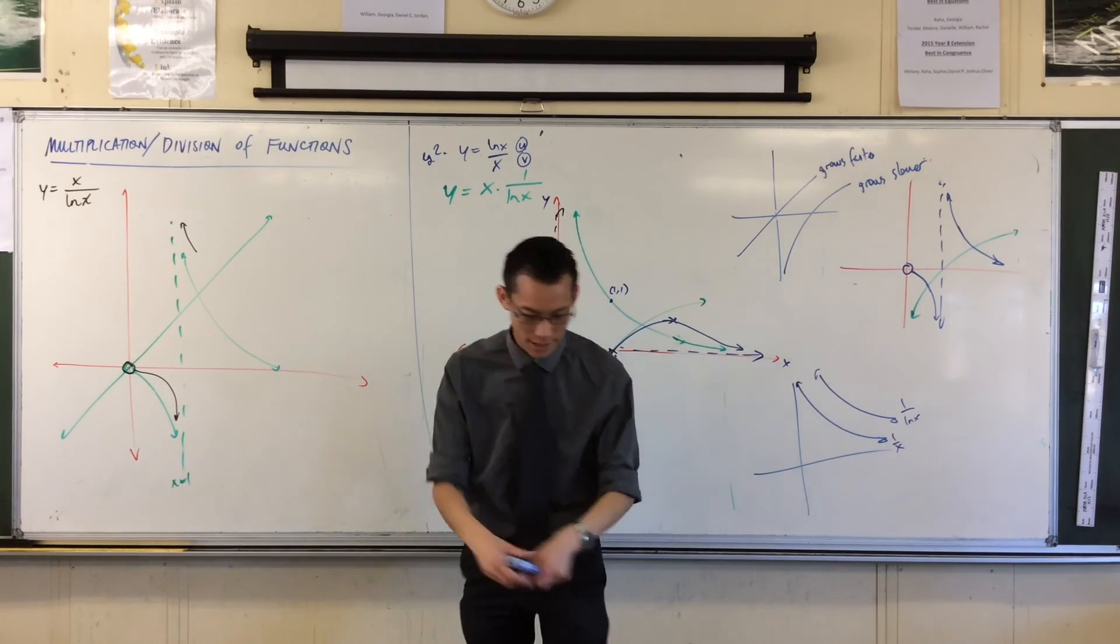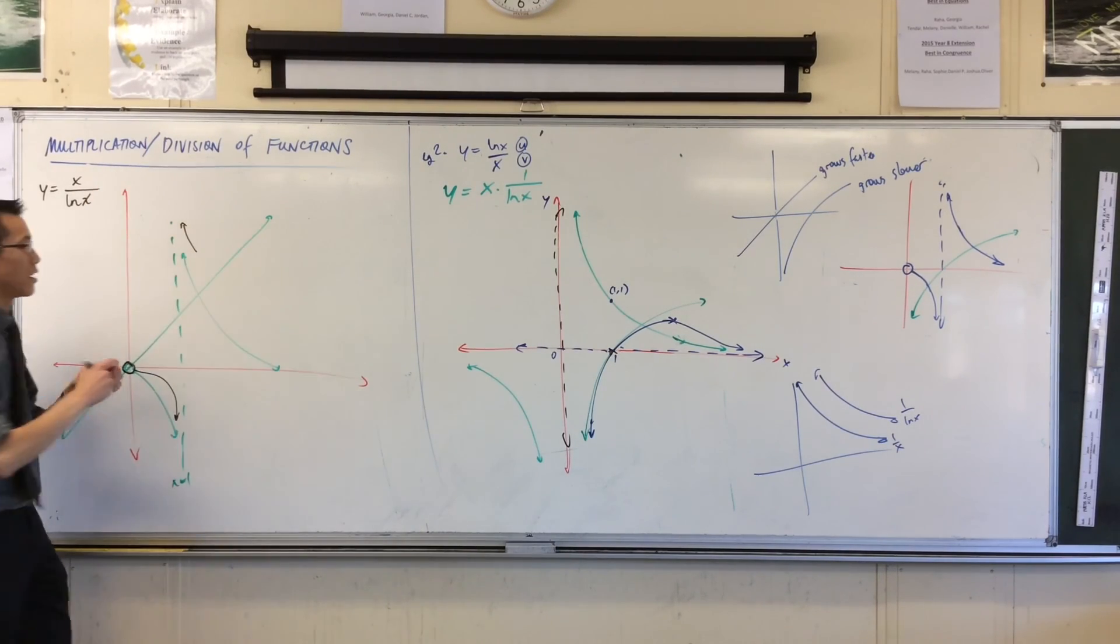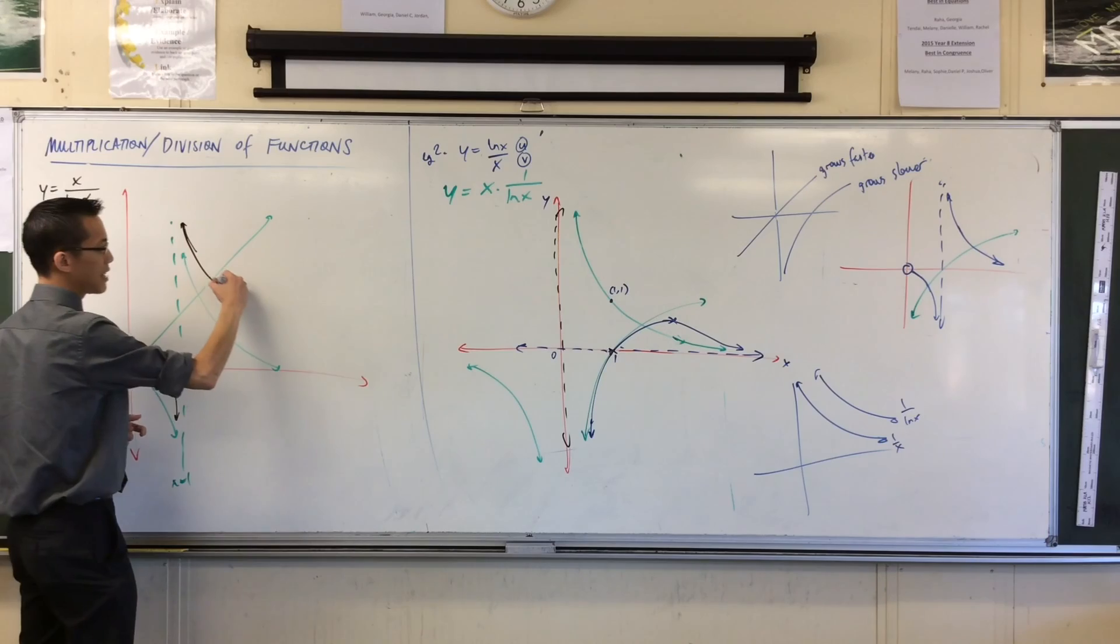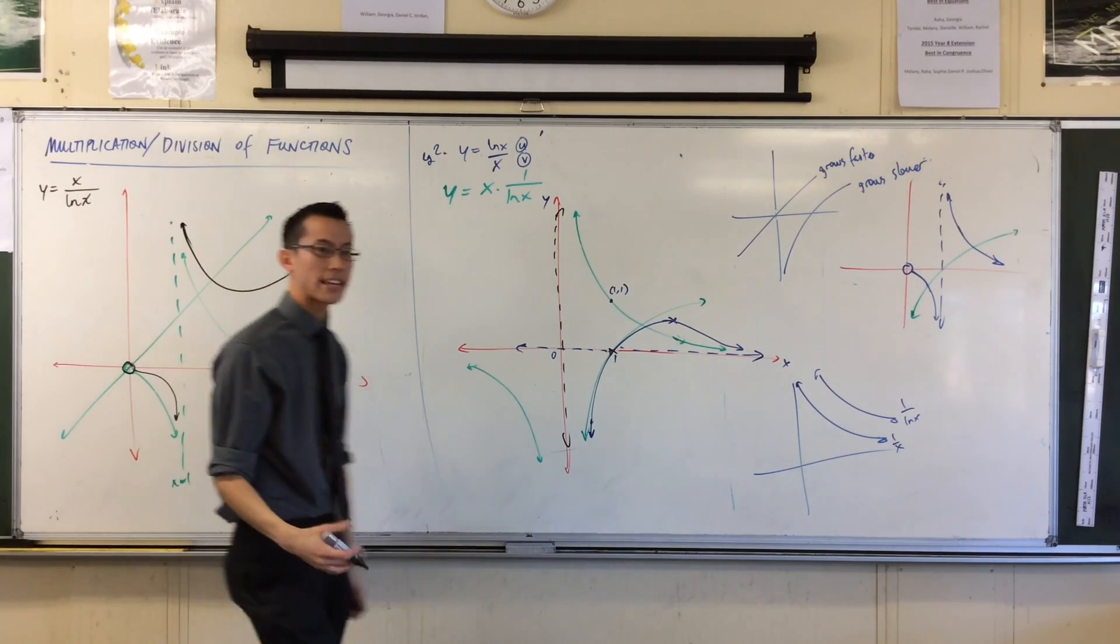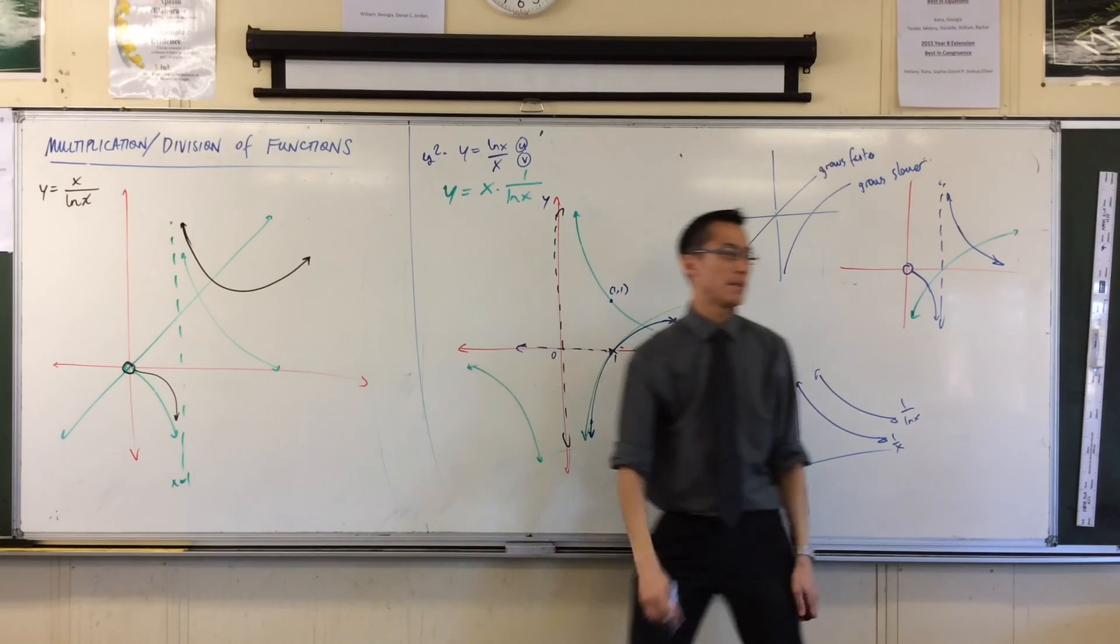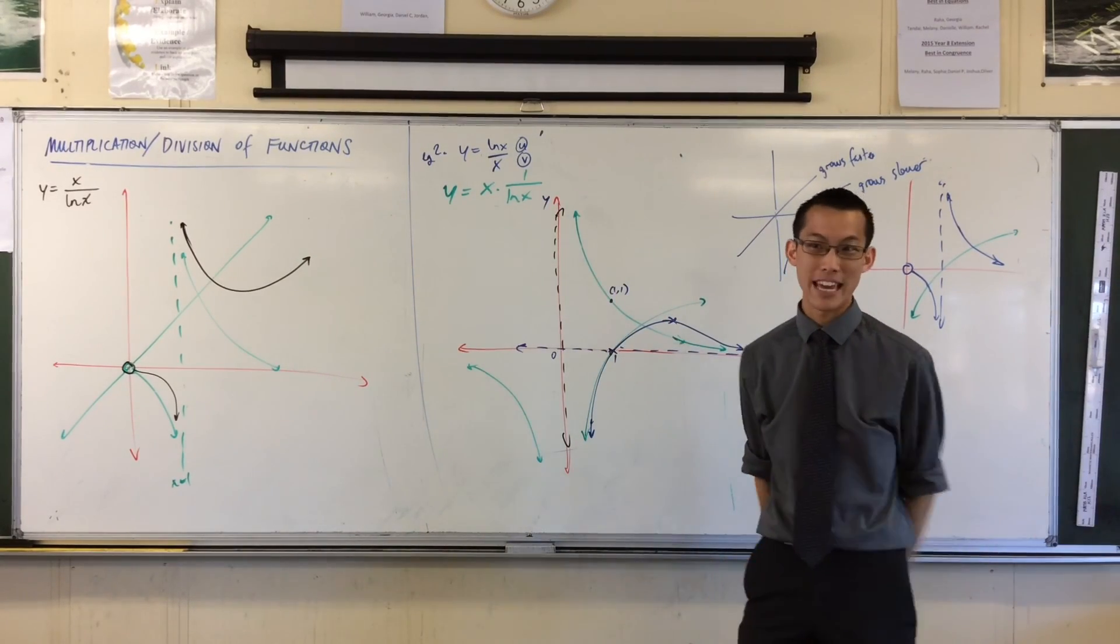Therefore, x is going to take over. He's going to be growing faster. So you end up getting this downward, but he has to turn. He has to turn around like that. And again, once we learn the calculus for these functions, we'll be able to determine exactly where it turns, and I wouldn't be surprised if it was e.